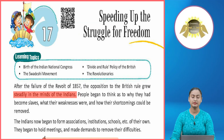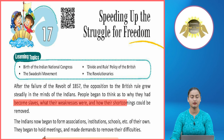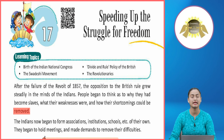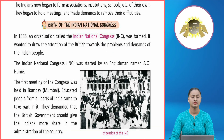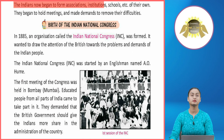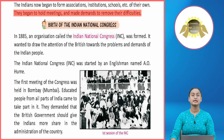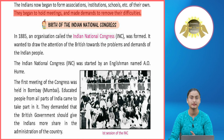After the failure of the Revolt of 1857, the opposition to British rule grew steadily in the minds of Indians. People began to think as to why they had become slaves, what their weaknesses were, and how their shortcomings could be removed. Indians now began to form associations, institutions, and schools of their own and held meetings to demand the removal of their difficulties.